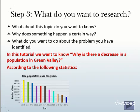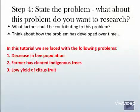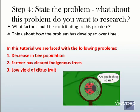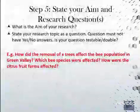Step four requests us to state the problem or issue, and ask what about this problem we want to research. In our example, we notice that there is a decrease in bee population where a farmer has cleared indigenous trees, leading to a low yield of citrus fruit. We want to research the link between these three events.